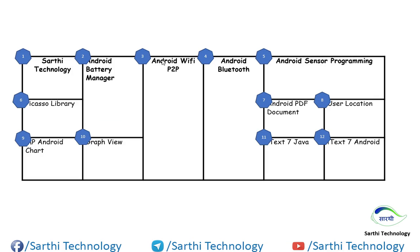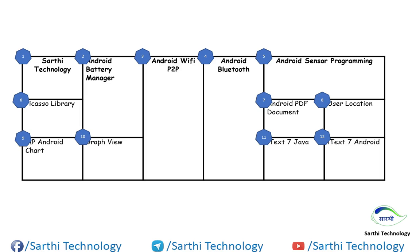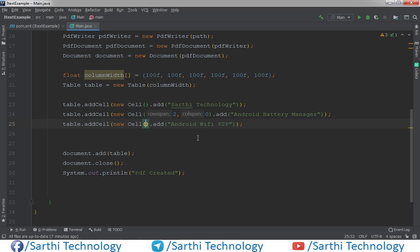Now the third cell is Android Wi-Fi P2P. And for the third cell we have row span 3 — rows 1, 2, and 3 — and column span 0. So here we will put 3 comma 0.